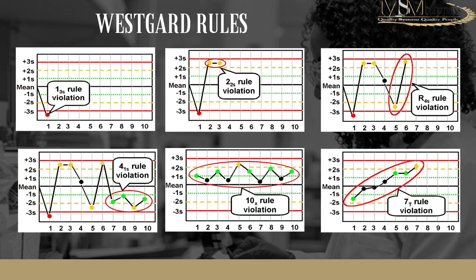The last rule is the 7T rule violation: when you have seven points in either an increasing or decreasing pattern, that is also a violation. You can see a clear trend — either increasing or decreasing — with seven points consistently moving in one direction. This often signals something wrong with your system, such as a QC material depreciating and needing a fresh batch, instrument contamination, or another issue causing drift.